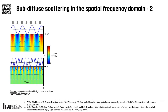An interesting aspect of SFDI is that the sinusoidal patterns of light propagate at different depths depending on the spatial frequency. This is because tissue acts as a low-pass filter, blurring out the pattern faster when the spatial frequency is higher.